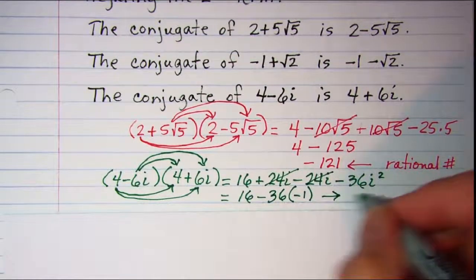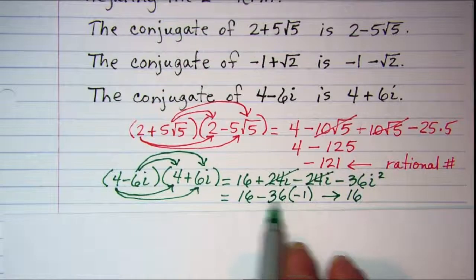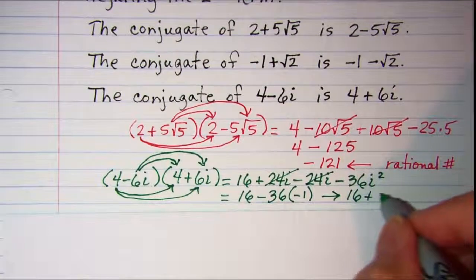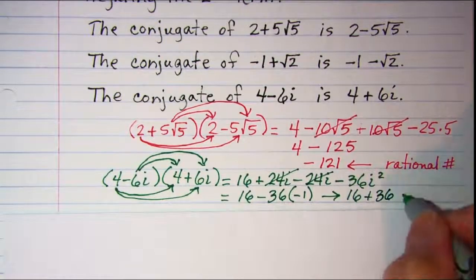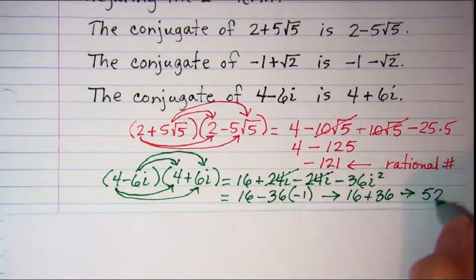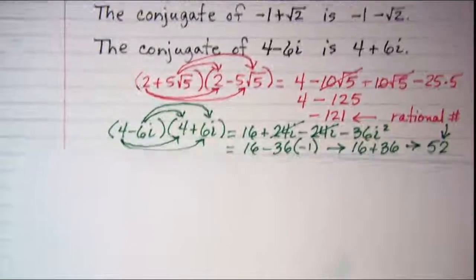So this simplifies to 16, and negative 36 times negative 1 is positive 36. So that is 52, which again is a rational number. Let's do a problem.